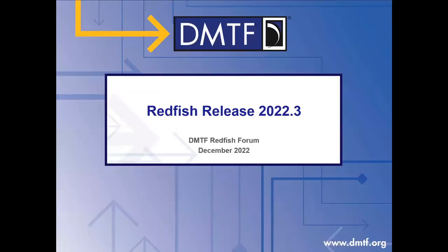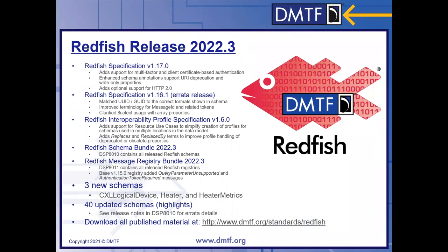The topic for today is the Redfish release 2022.3 — that's the third release of this year, which was made available at the end of December after approval by the DMTF Redfish Forum. In this release there were a lot of pieces touched, a lot of minor changes. There were two revisions of the Redfish specification. There was an errata release that had a number of clarifications, especially around things like the use of UUID formats and making sure that what we showed in the spec was matching what was in the schema files.